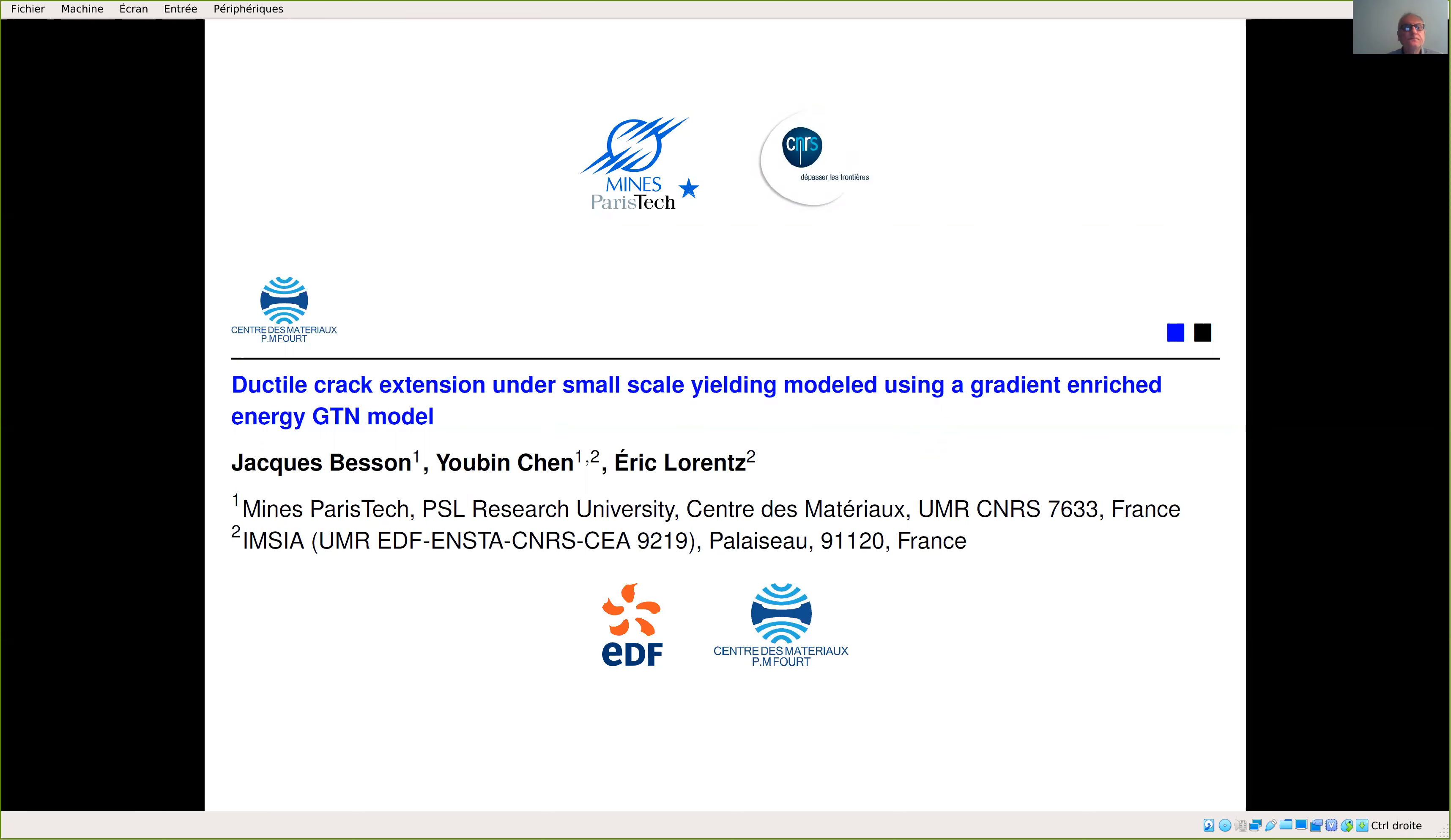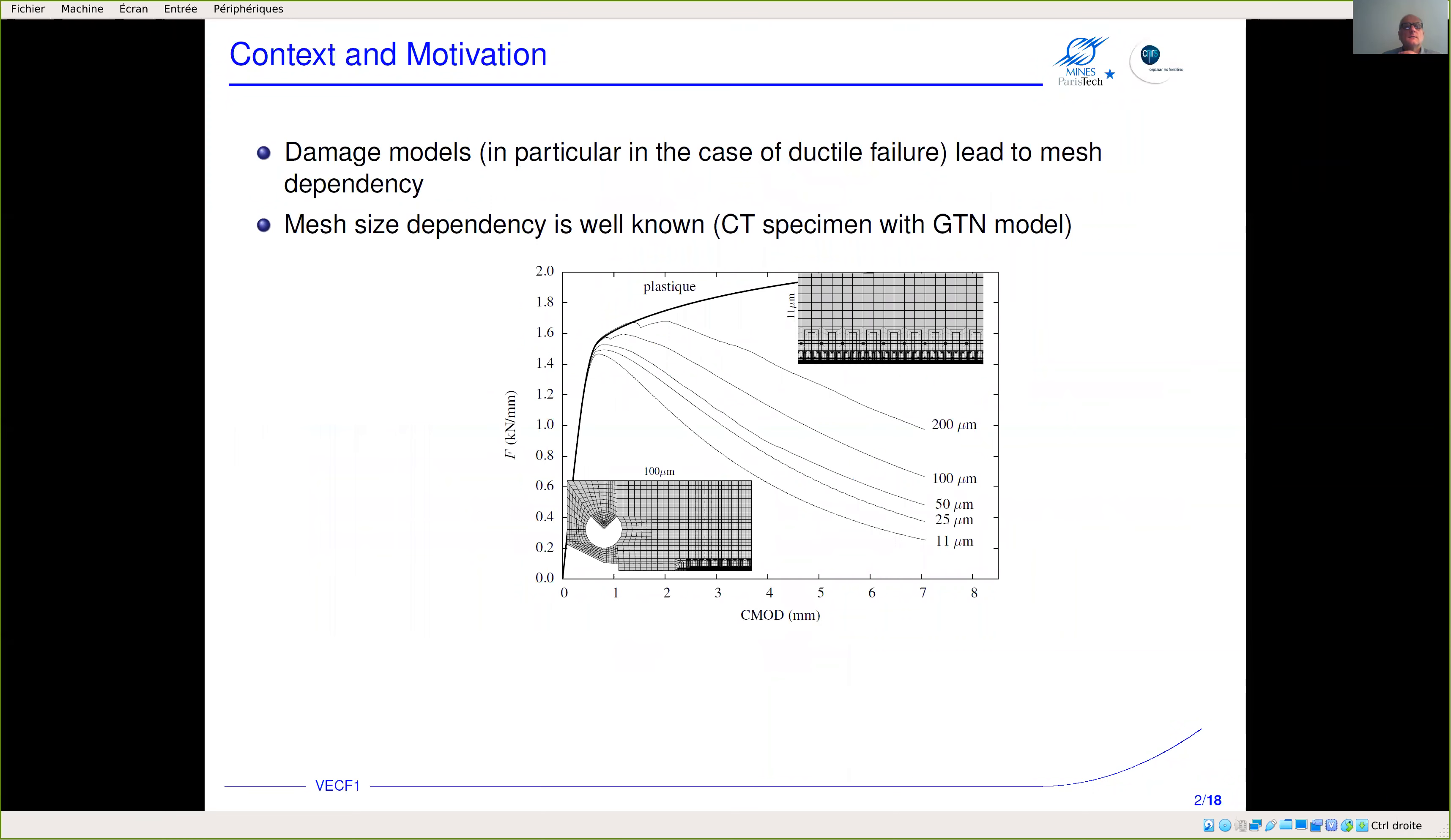As you know, damage models, and in particular models for ductile failure, lead to mesh size dependency. Here is an example in the case of a CT specimen which we model using a GTN model. The force versus crack mouth opening displacement—the thick curve corresponds to the purely elastoplastic calculation and the other thin curves correspond to calculation with different mesh sizes.